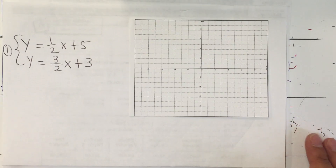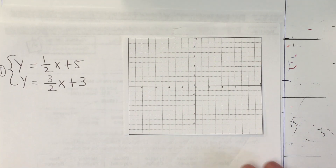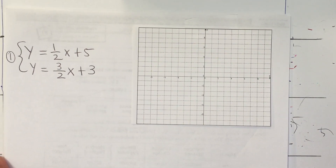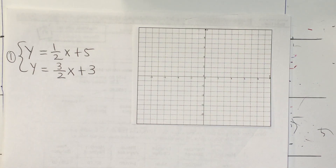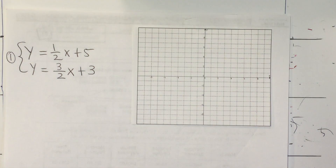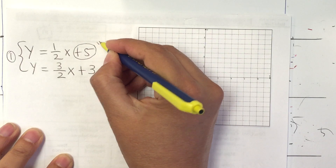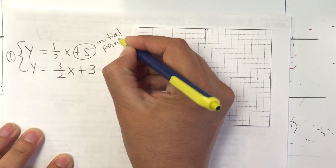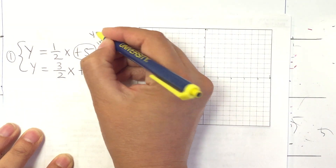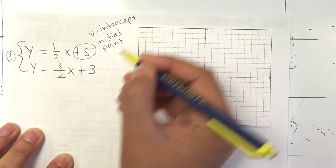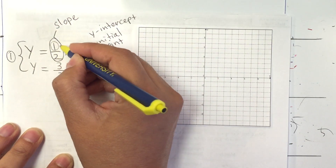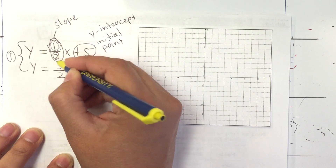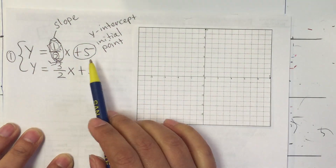This is also kind of a review from 4.7, because you already know how to graph this. That's why in the last lesson we were manipulating the equation so that we can leave it in y = mx + b to make it easier to graph. Remember from 4.8: this is our initial point — it's always the y-intercept — and over here you will have what's called the slope, which is rise over run.